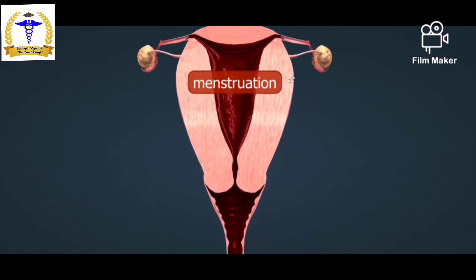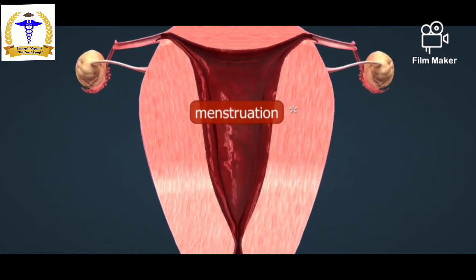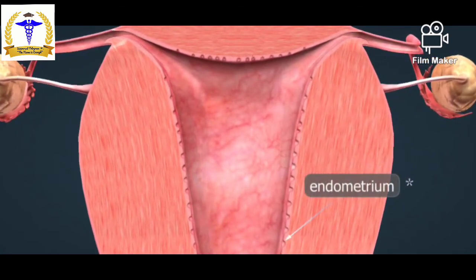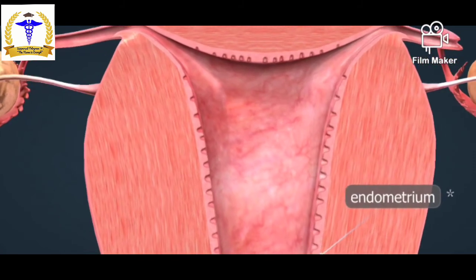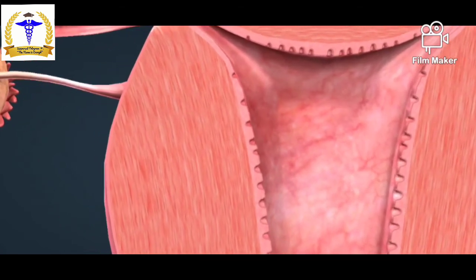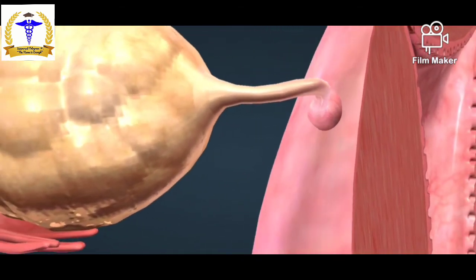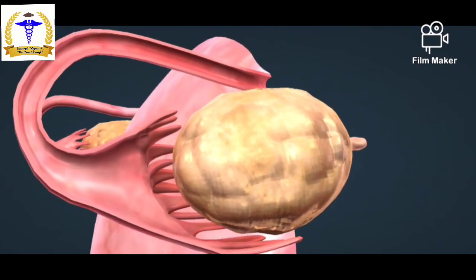After menstruation, the newly formed endometrium starts thickening. Right after menstruation it is only about 0.5 mm thick, while on the 14th day of the cycle during ovulation it grows to about 3 to 5 mm.